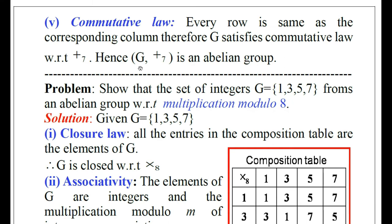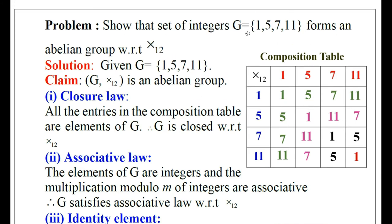Show that the set of integers G = {1,5,7,11} forms an abelian group with respect to multiplication modulo 12. G consists of only 4 elements: 1, 5, 7, 11. These elements are all relatively prime to 12 — GCD(1,12)=1, GCD(5,12)=1, GCD(7,12)=1, and GCD(11,12)=1. Whenever the GCD of any two elements is 1, we say they are relatively prime. Hence, these elements are all relatively prime to 12.